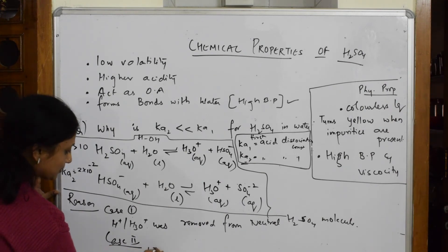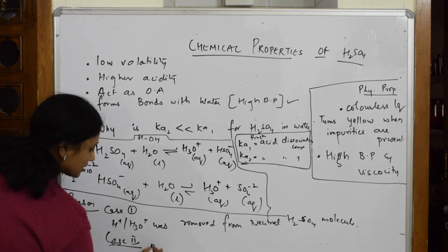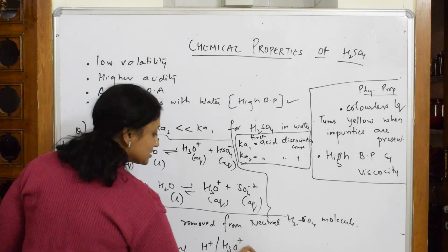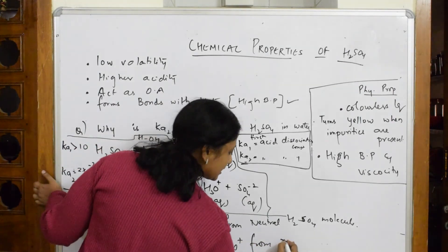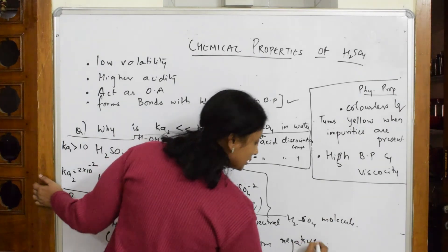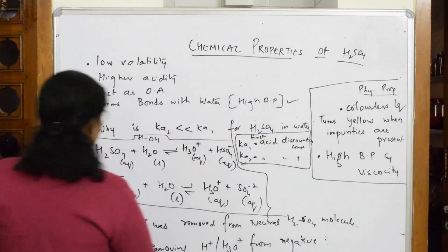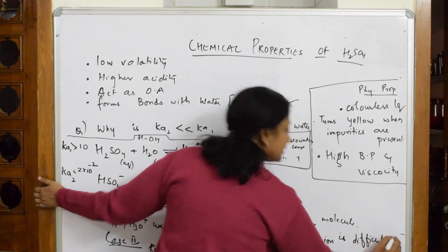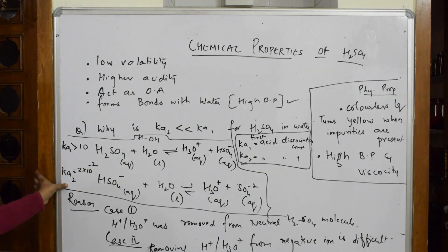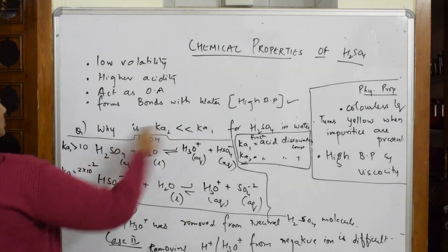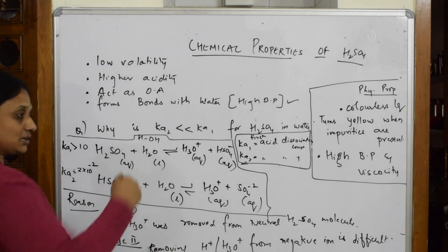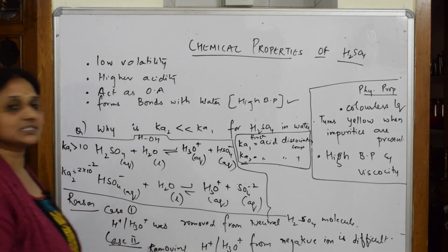Hence the Ka value is decreased. That's what you have to remember. It's easy to take out from neutral, so the Ka value is high. The Ka value has reduced because I have to pull that proton from that negative ion. This is the reason.